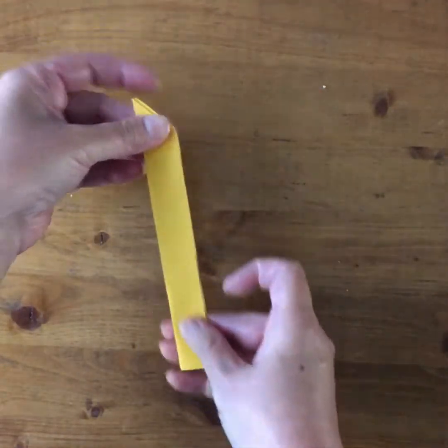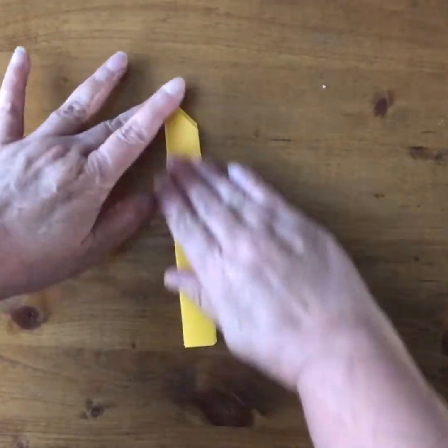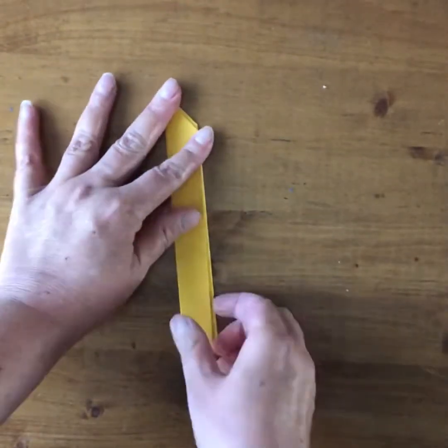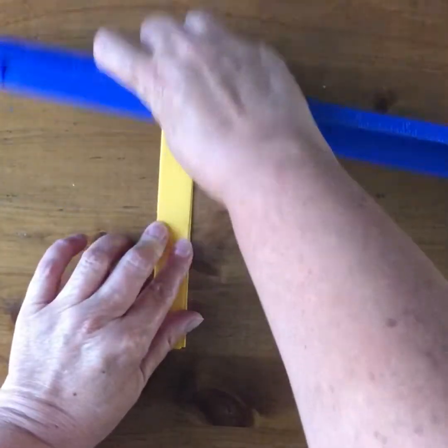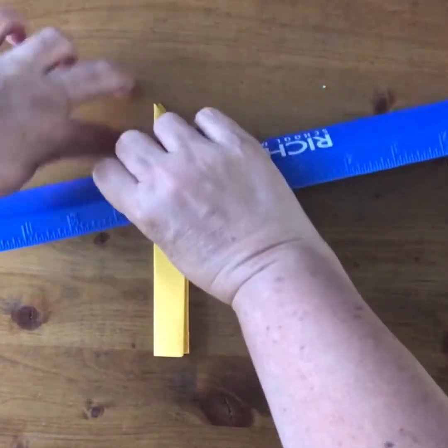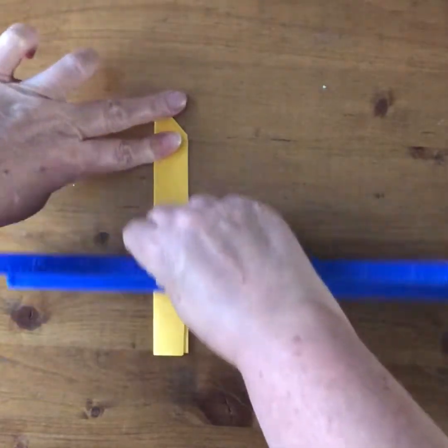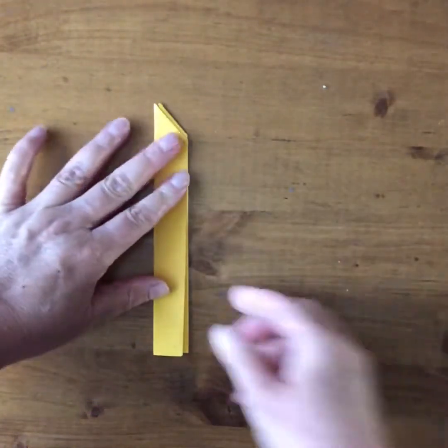And then I'm going to fold these together. And again, this is getting really thick here. And so you might want to smooth this over, using a ruler to get those creases really nicely folded.